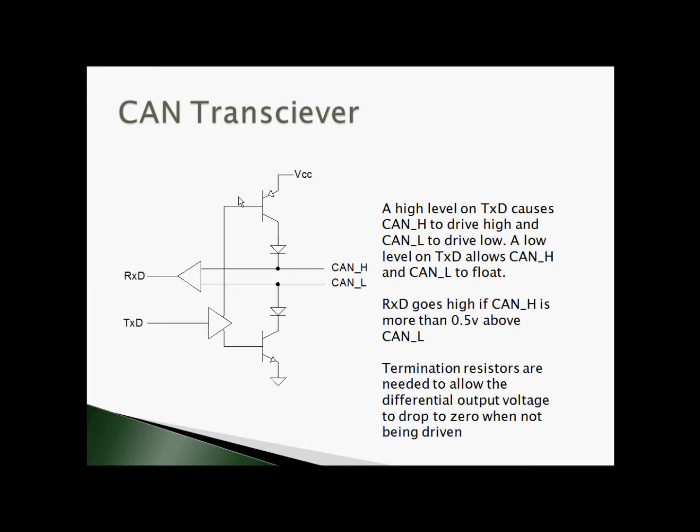The CAN transceiver is basically set up to be a differential wire-OR'd transmission system. Whenever TXD goes active, CAN H will go high and CAN L will go low, producing a differential voltage across the bus. RxD monitors the bus and if it sees more than half a volt differential between CAN high and CAN low, it will produce an active signal.